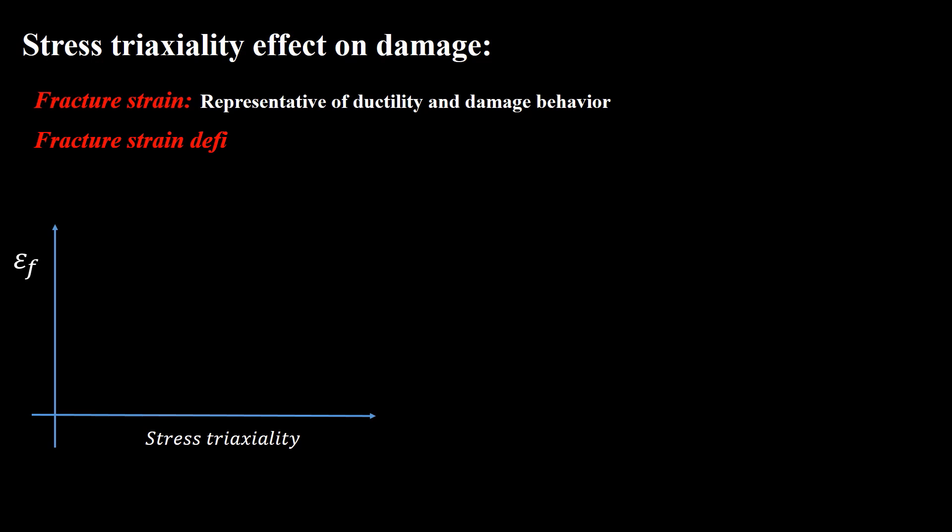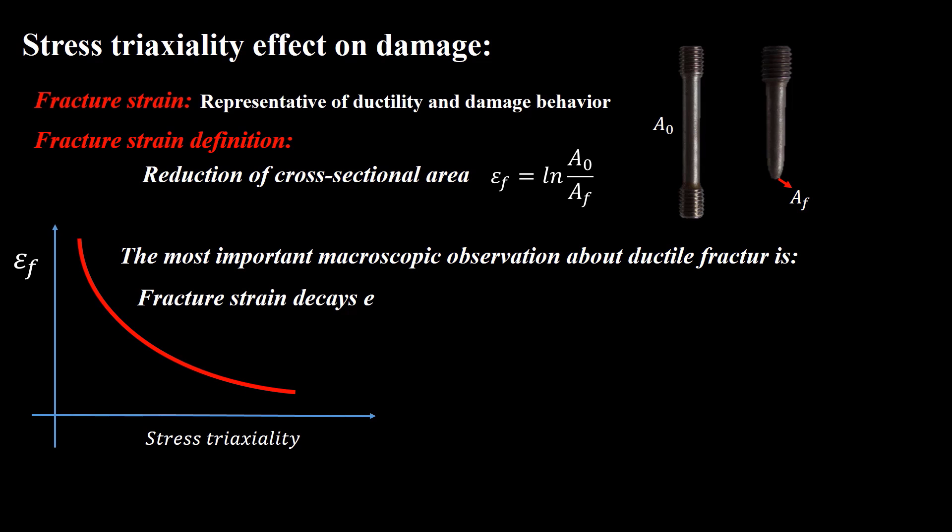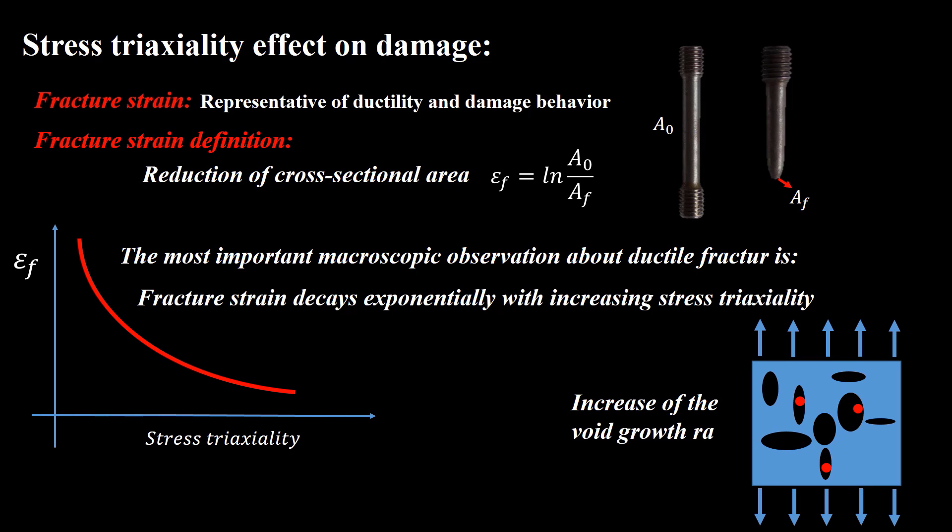To evaluate the effect of stress triaxiality on damage behavior, its effect on the fracture strain is investigated. Fracture strain is representative of ductility of a material. What is the relationship between fracture strain and stress triaxiality? At first let's define fracture strain. The fracture strain is defined from the reduction of cross-sectional area measured on broken samples. In this formula, A0 is the initial cross-sectional area and Af is the final cross-sectional area of the broken sample. The most important macroscopic observation about ductile fracture is the fracture strain decays exponentially with increasing stress triaxiality. This effect is directly related to a significant increase of the void growth rate with increasing stress triaxiality.